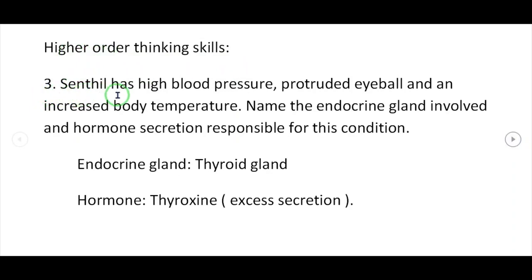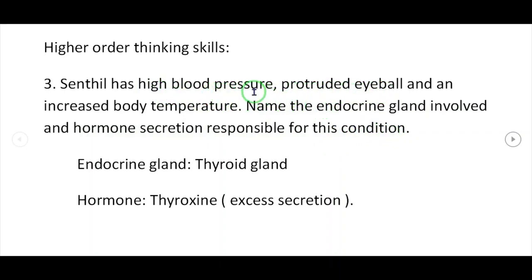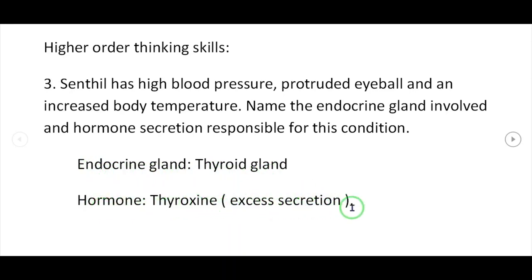Higher order thinking question 3: Sintil has high blood pressure, protruded eyeball and increased body temperature. Name the endocrine gland and hormone responsible. The endocrine gland involved is the thyroid gland, and the hormone is thyroxine — this condition is due to excess secretion of thyroxine.